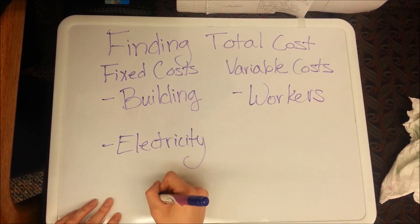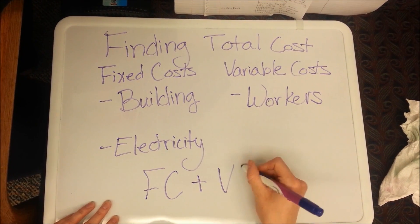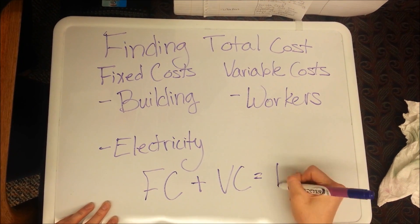By adding together the fixed costs and the variable costs, we are able to determine the total cost of producing the good.